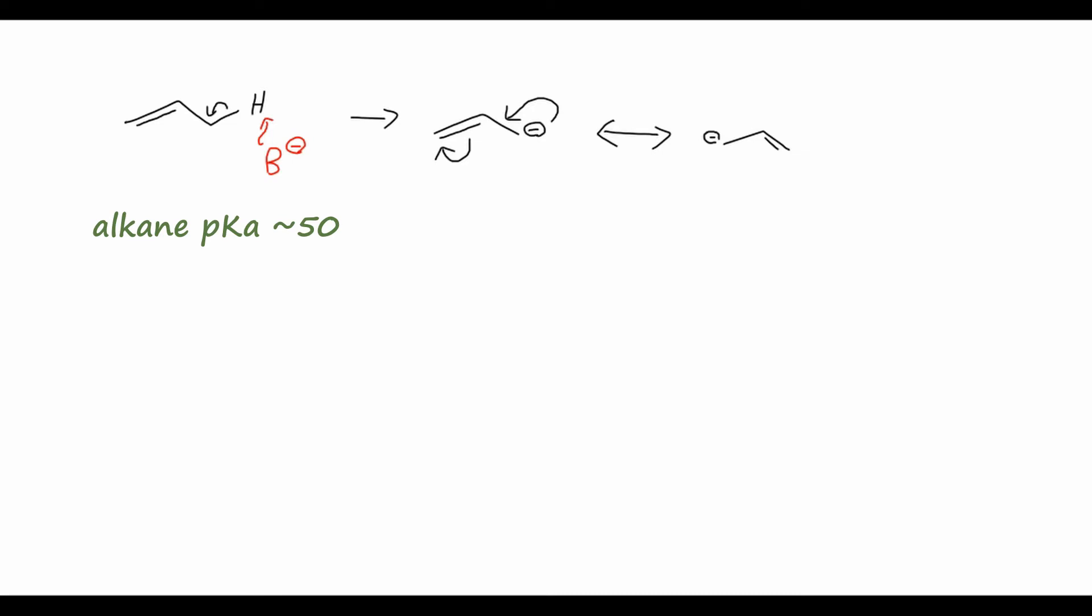And I've drawn a double-headed arrow to signify that this is a resonance. So that means that we can draw the resonance hybrid here, where we have our three-carbon chain, and now we have a dotted line in between all three carbons because that double bond is delocalized. And we also have partial negative charges on the one and three carbons.